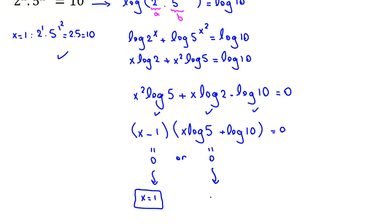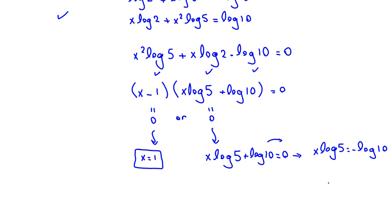In second case, x log 5 equal to log, so let me write x log 5 plus log 10 equal to 0. So, we take log 10 to the right side. So, x log 5 equal to negative log 10. And then, we can divide both sides by log 5. It will be negative log 10 over log 5. Okay, it is the second answer here.